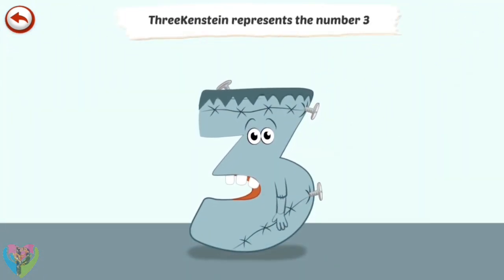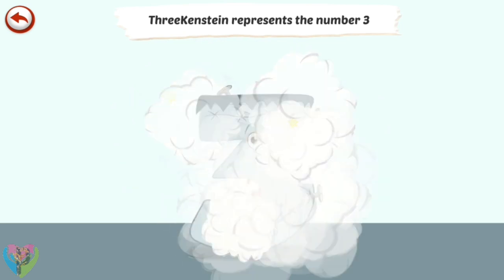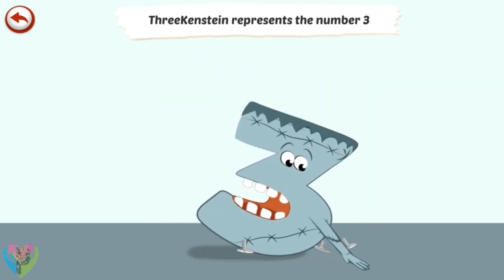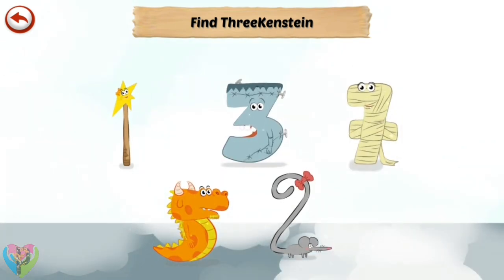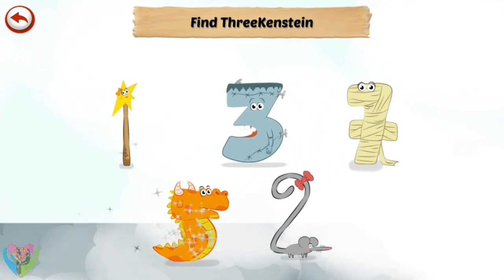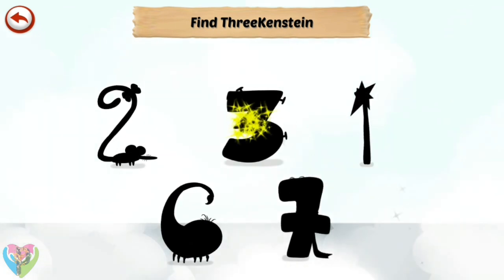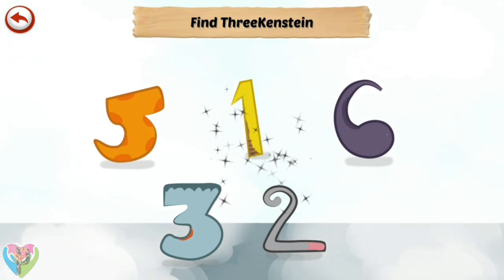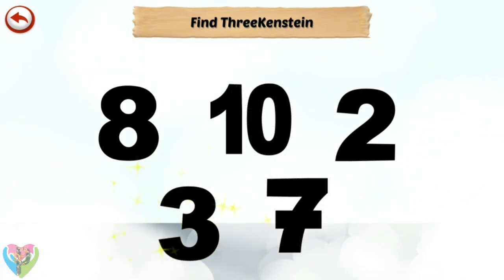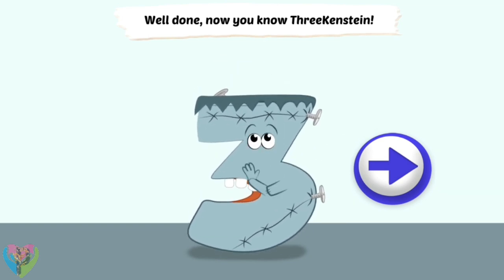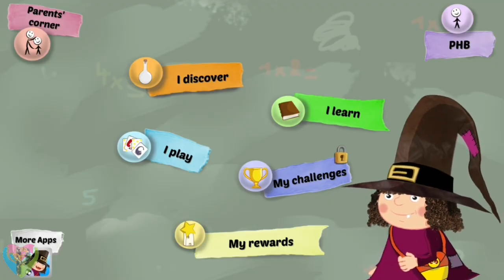Thurkenstein represents the number 3. Thurkenstein is a monster who has a tendency to break into a thousand pieces. Find Thurkenstein. Well done. Now you know Thurkenstein.